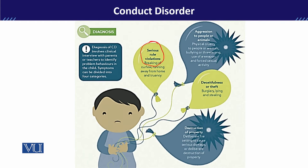For example, parents set a bedtime at night which the child refuses to follow. Or refusing to go to school — these are examples of serious rule violations that children with conduct disorder may exhibit.